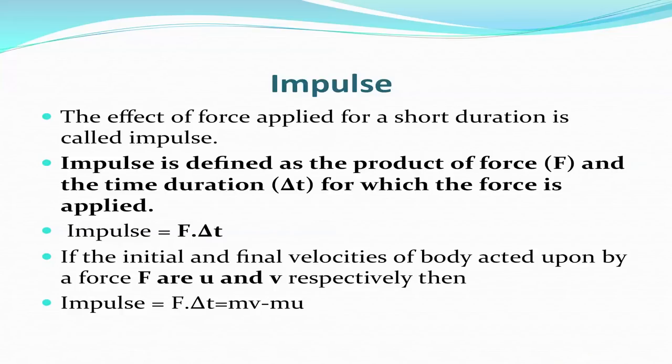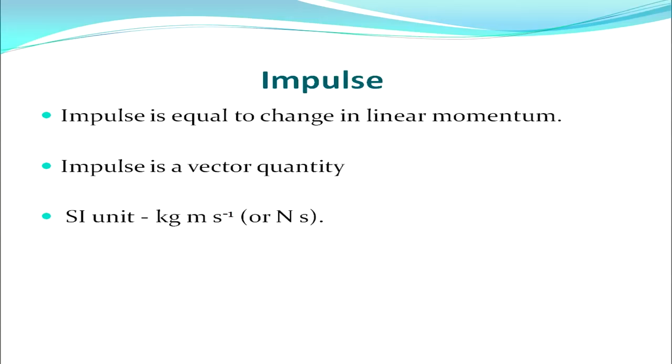Now, what is impulse? The effect of a force applied for a short duration is called impulse. Impulse is defined as the product of force F and the time duration ΔT for which the force is applied: impulse = F·ΔT. If the initial and final velocities of a body acted upon by a force F are u and v respectively, then impulse equals the change in linear momentum. Impulse is a vector quantity and its SI unit is kg meter per second.